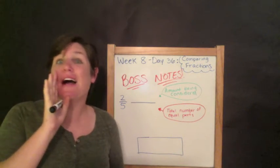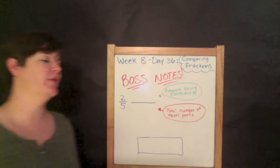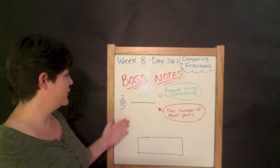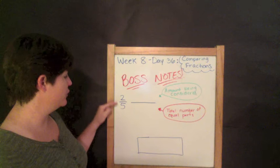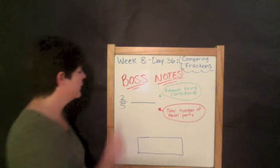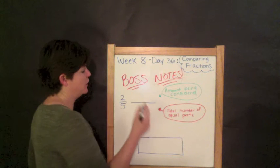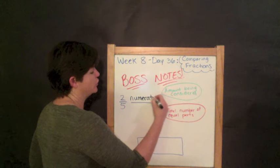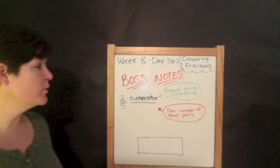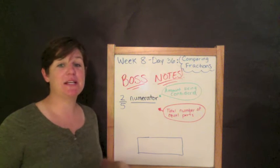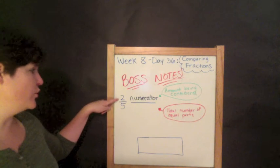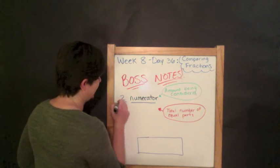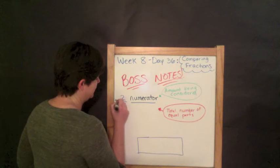Boss notes! Here we go. You should have these boss notes with you since you've downloaded your copy. What you'll see is a number 2 and a number 5 with a fraction bar. The number on top of a fraction bar is called the numerator — go ahead and write down the word numerator on the top line. The numerator describes the amount that is being considered.